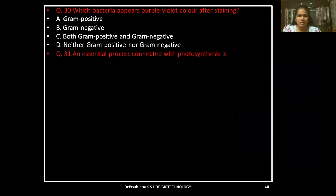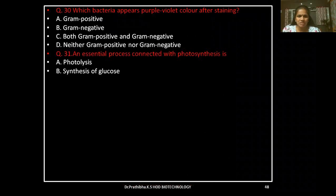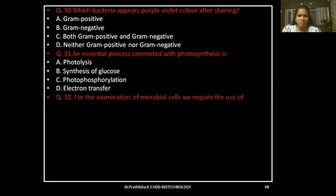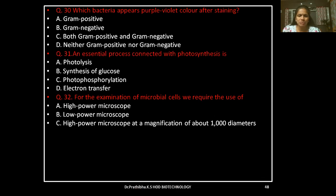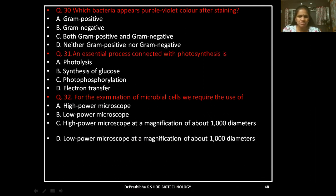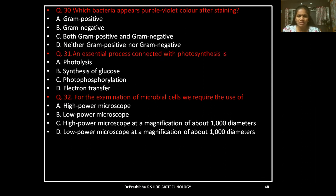Question 31: An essential process connected with photosynthesis is — photolysis, synthesis of glucose, photophosphorylation, or electron transfer. Question 32: For the examination of microbial cells, we require the use of — high power microscope; low power microscope; high power microscope at magnification of about 1000 diameters; or low power microscope at magnification of about 1000 diameters.